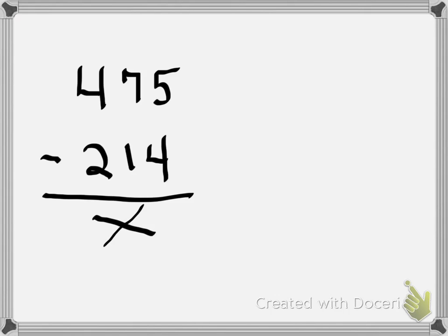I'm going to start by rounding to the nearest hundred today. So 475 is somewhere between 400 and 500. I'm going to look to my tens place. My tens place is a 7, so I'm going to round up. 475 would round to 500.